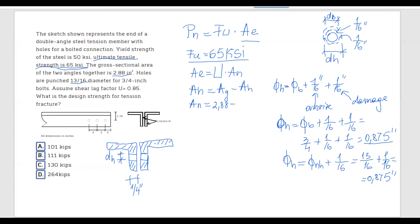And then the hole, we have two of them. We're going to do 0.875 multiplied by a quarter two times. So I'm going to do 0.5. So AN is going to be 2.88 minus 0.875 times 0.5, and you should get 2.44 inches squared.